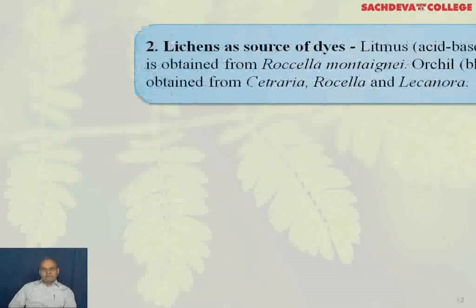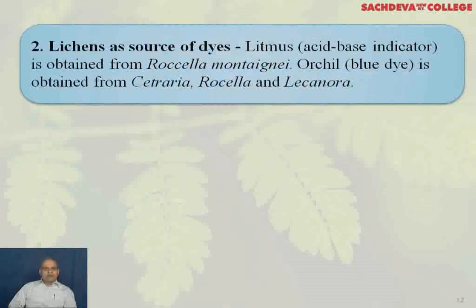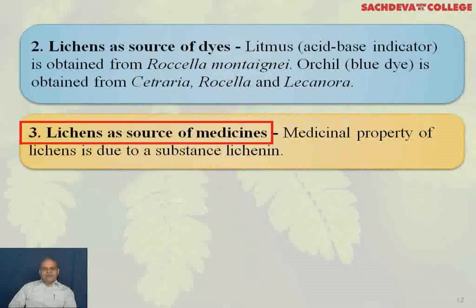Lichen is a source of dye. Litmus, the acid-base indicator, is obtained from Roccella montagnei. Orchil dye, which is blue, is obtained from Cetraria, Roccella, and Lecanora. This is Roccella, the source of litmus.